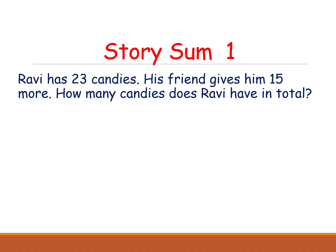Here is the first story sum. Ravi has 23 candies and his friend gives him 15 candies more. How many candies does Ravi have in total? Here we are using 'more' and 'total' — these two keywords are addition keywords.